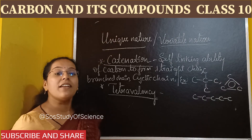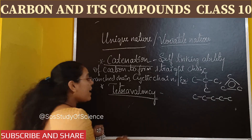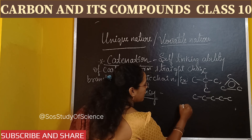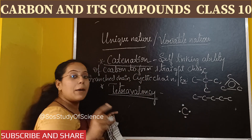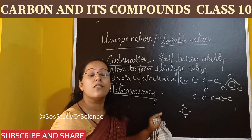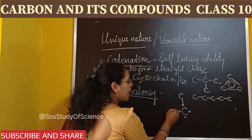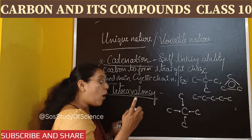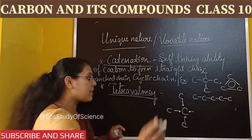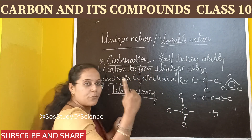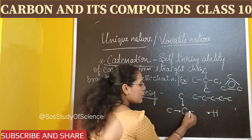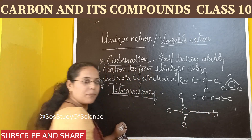Now let me explain tetravalency. Tetra means 4, and valency refers to valence electrons. Carbon has 4 valence electrons — that is, 4 electrons on its outermost shell. This carbon can link with another carbon atom. Alternatively, carbon can also link with an element which has monovalency. For example, hydrogen has atomic number 1, so its electron configuration is also 1 — it has 1 electron. So carbon and hydrogen can create a link between them.